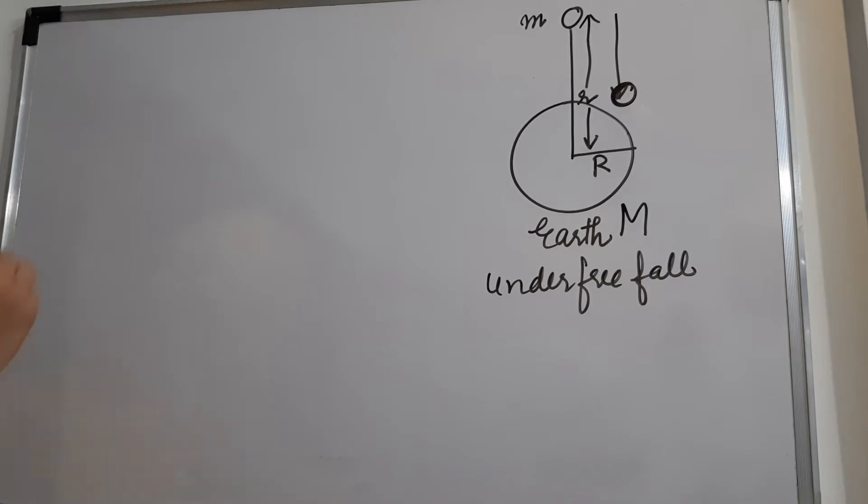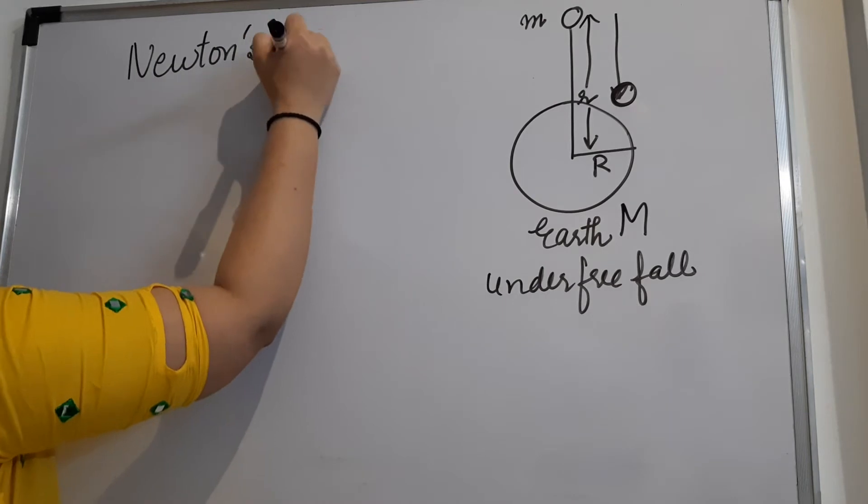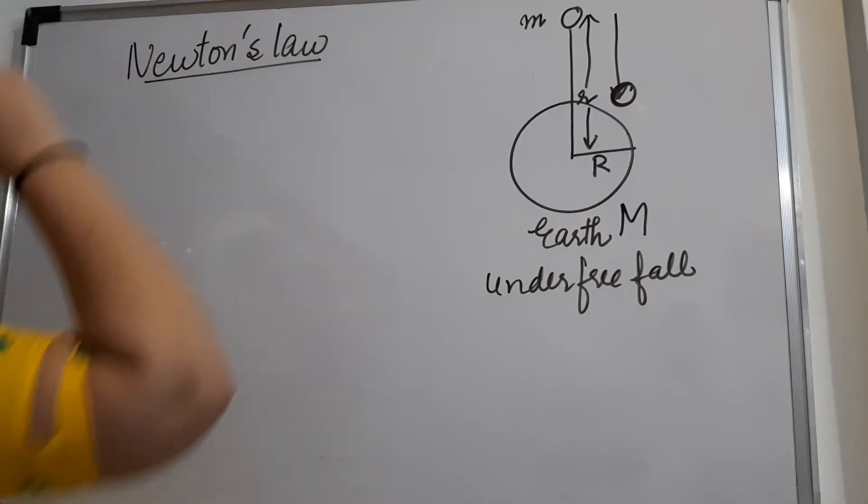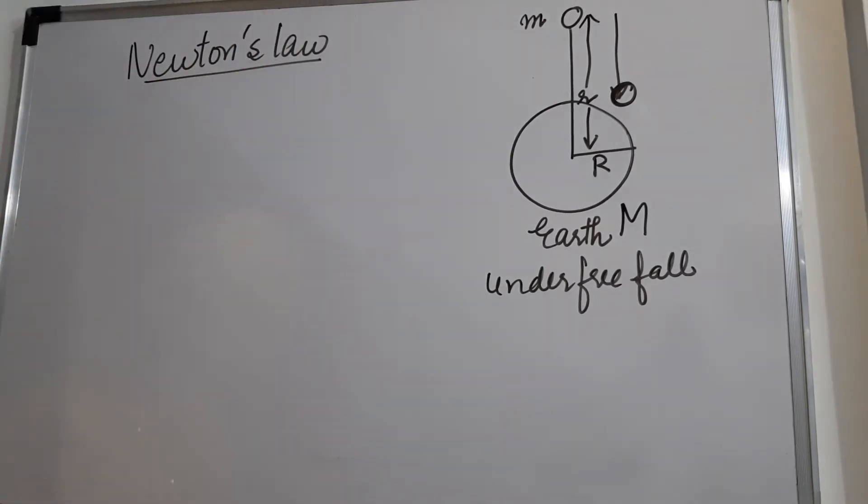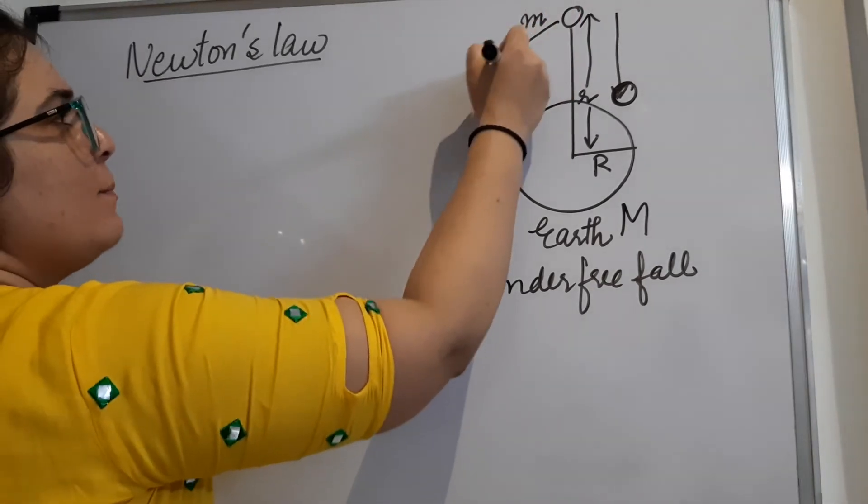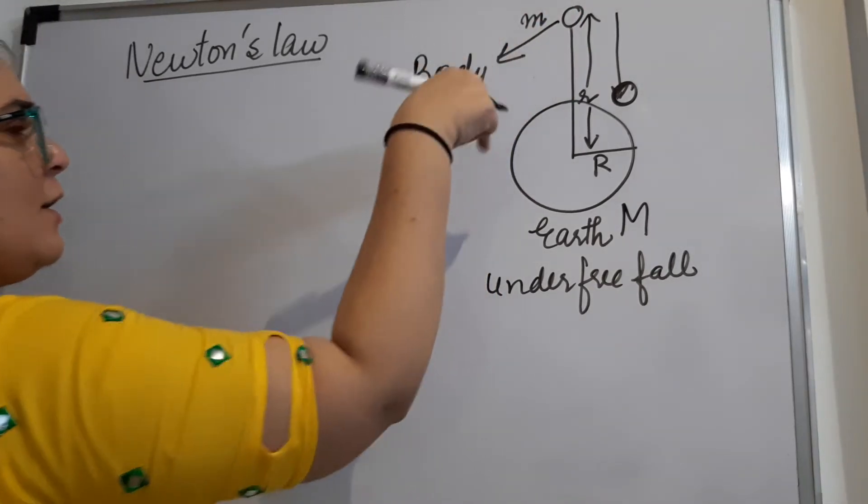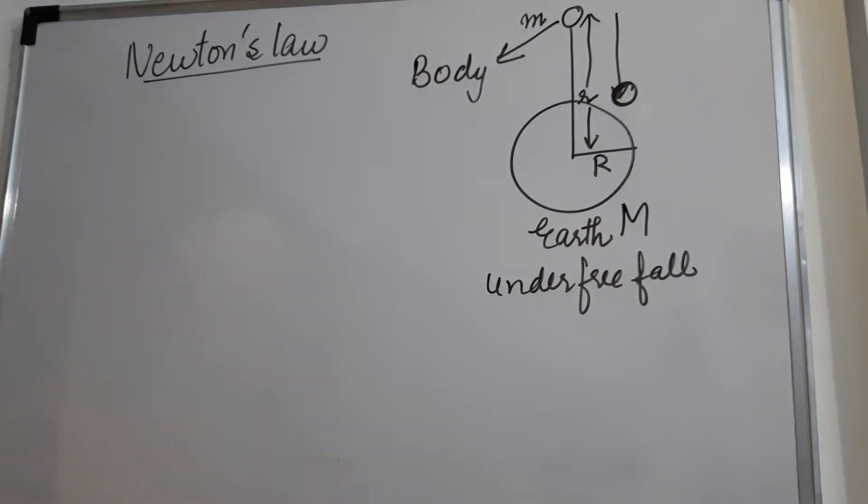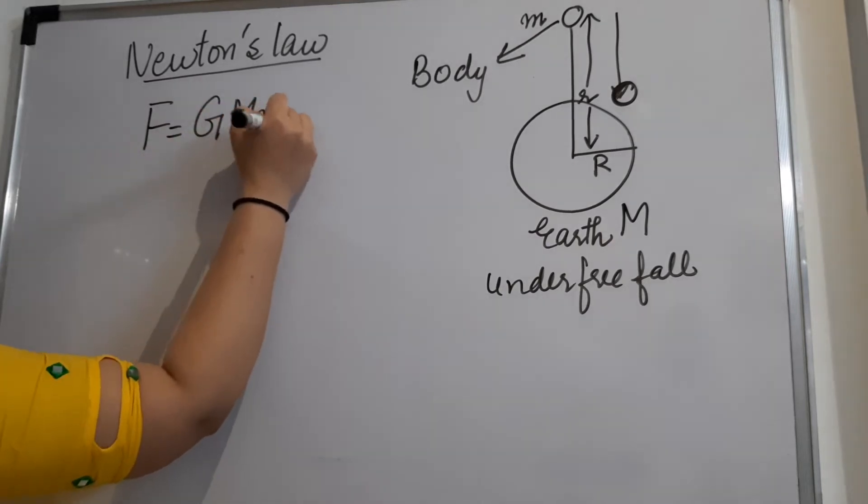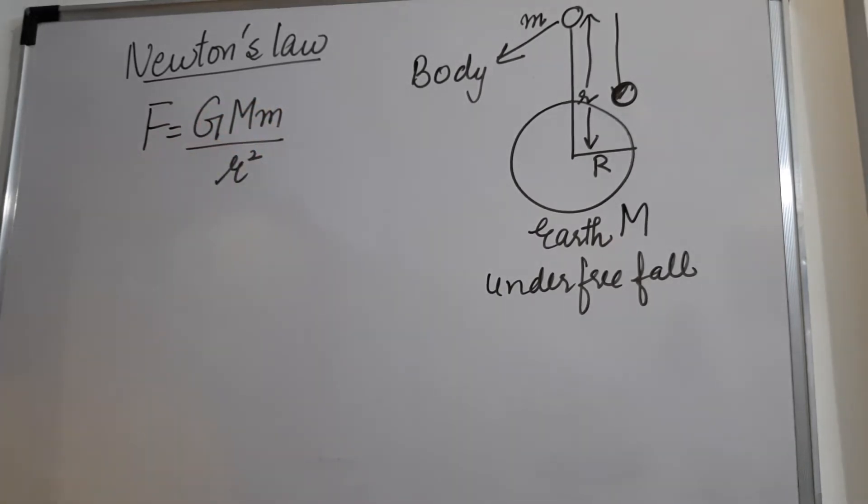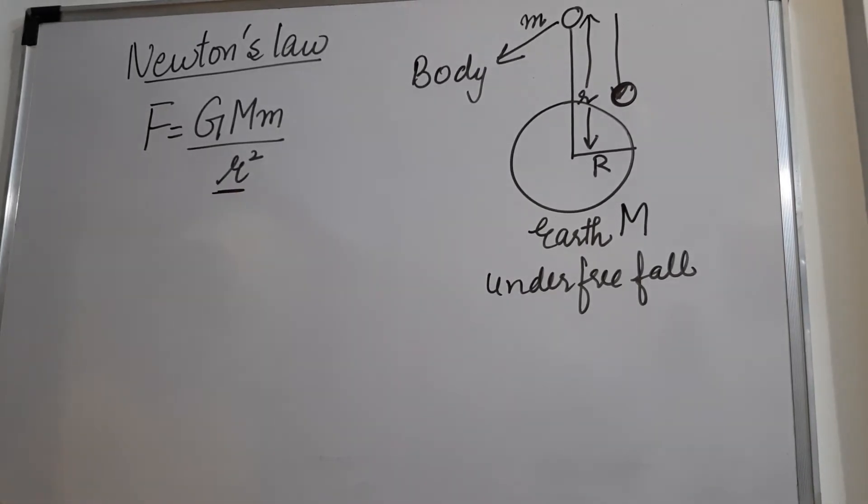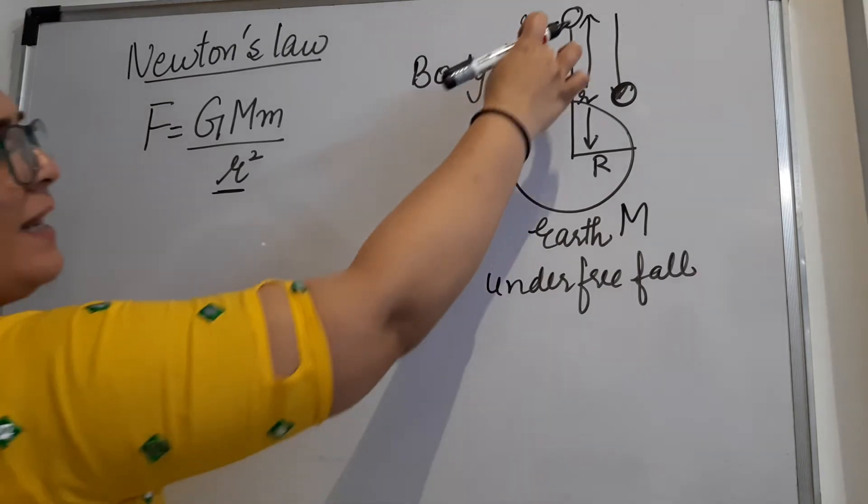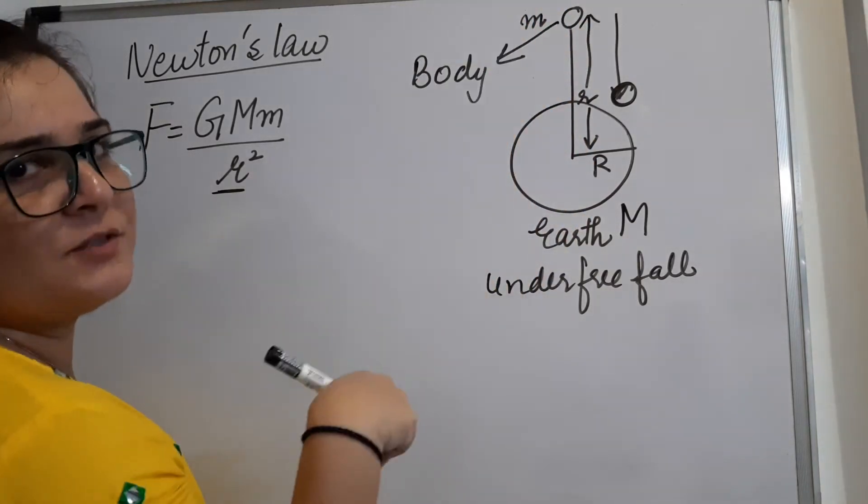Now, according to Newton's law of gravitation, any two objects will have some force of attraction between them. So here the two objects are this body and Earth, and both are going to experience the force of attraction. The formula says that F equals to GMm by r square. Why I have taken here small r? Because this r should be the distance between these two objects from the center of these two objects.